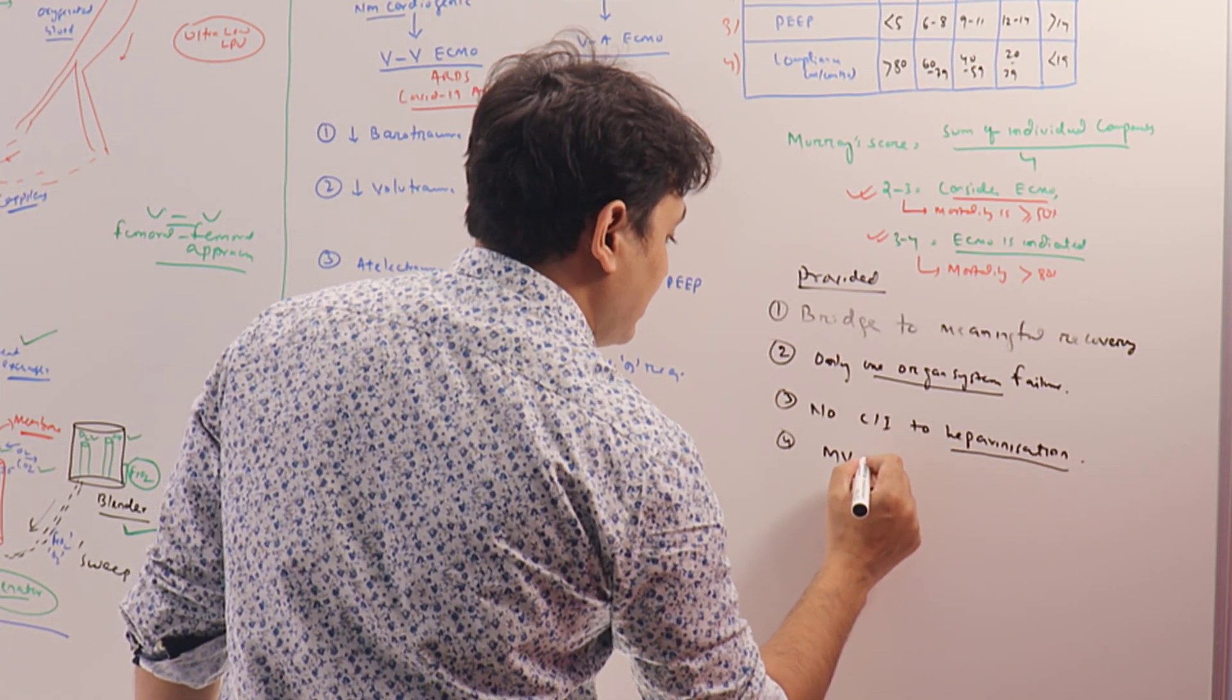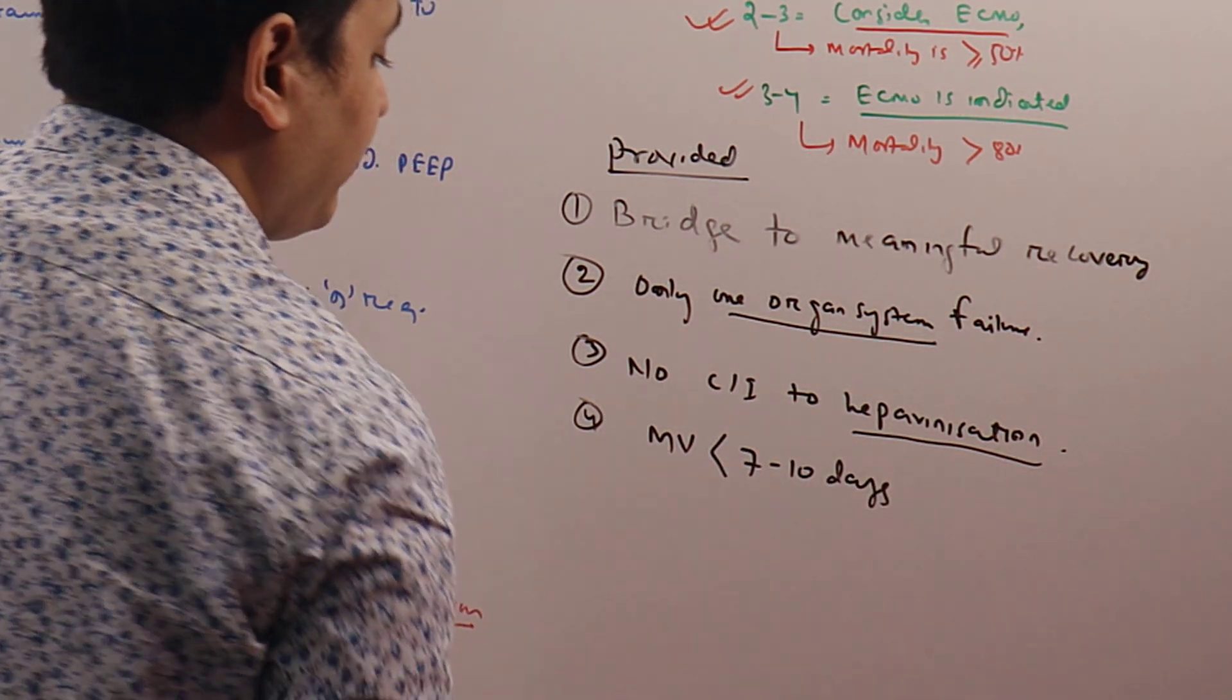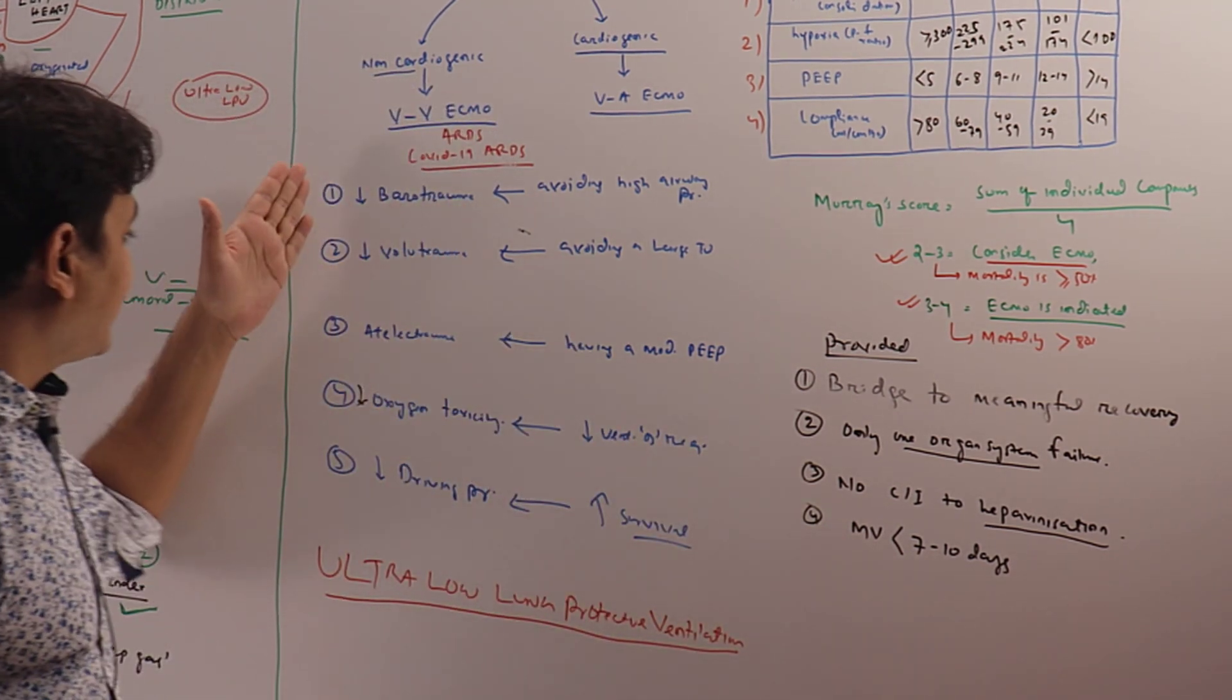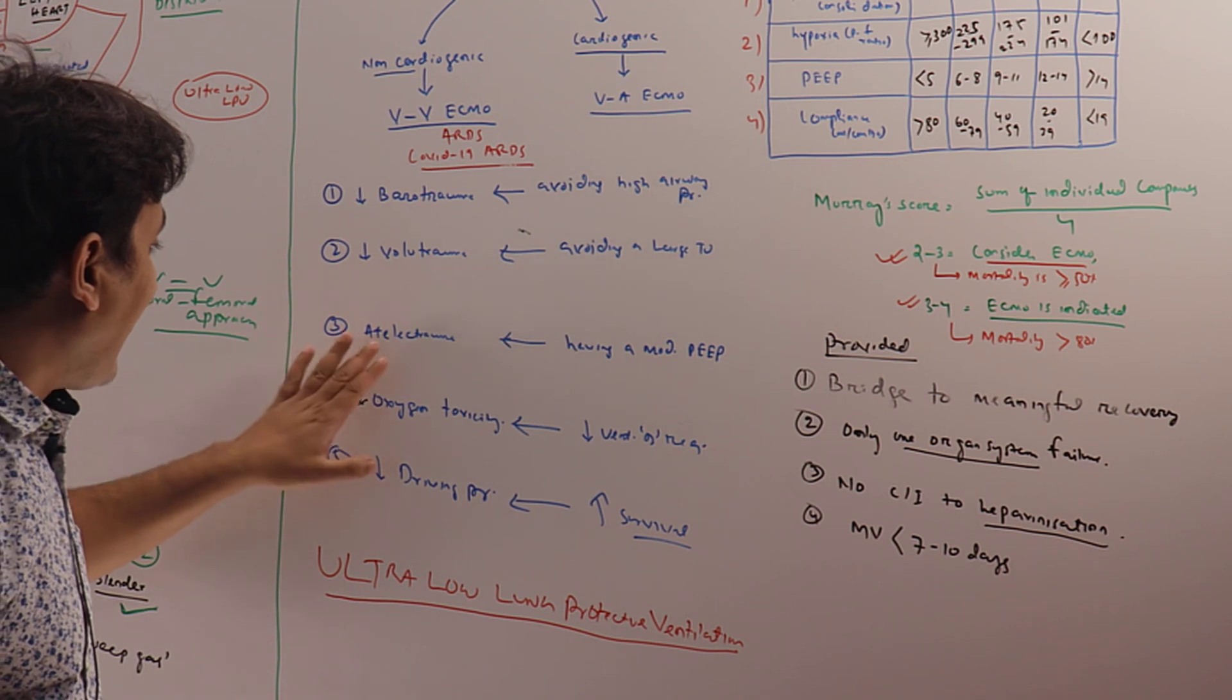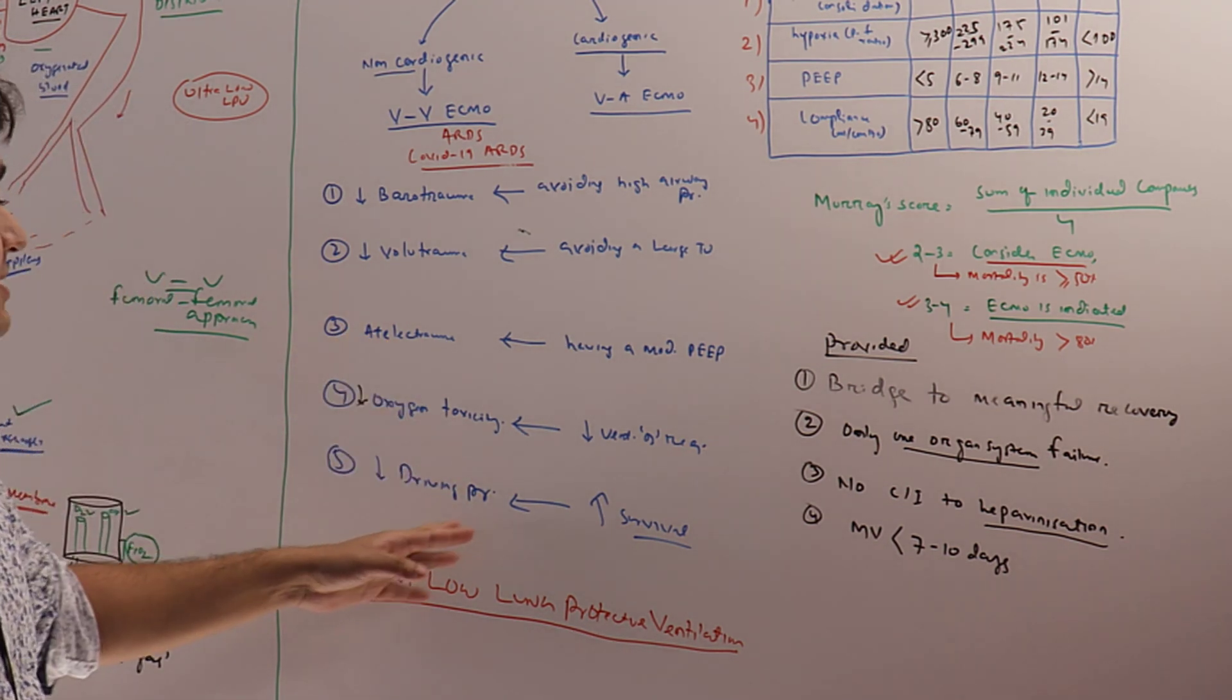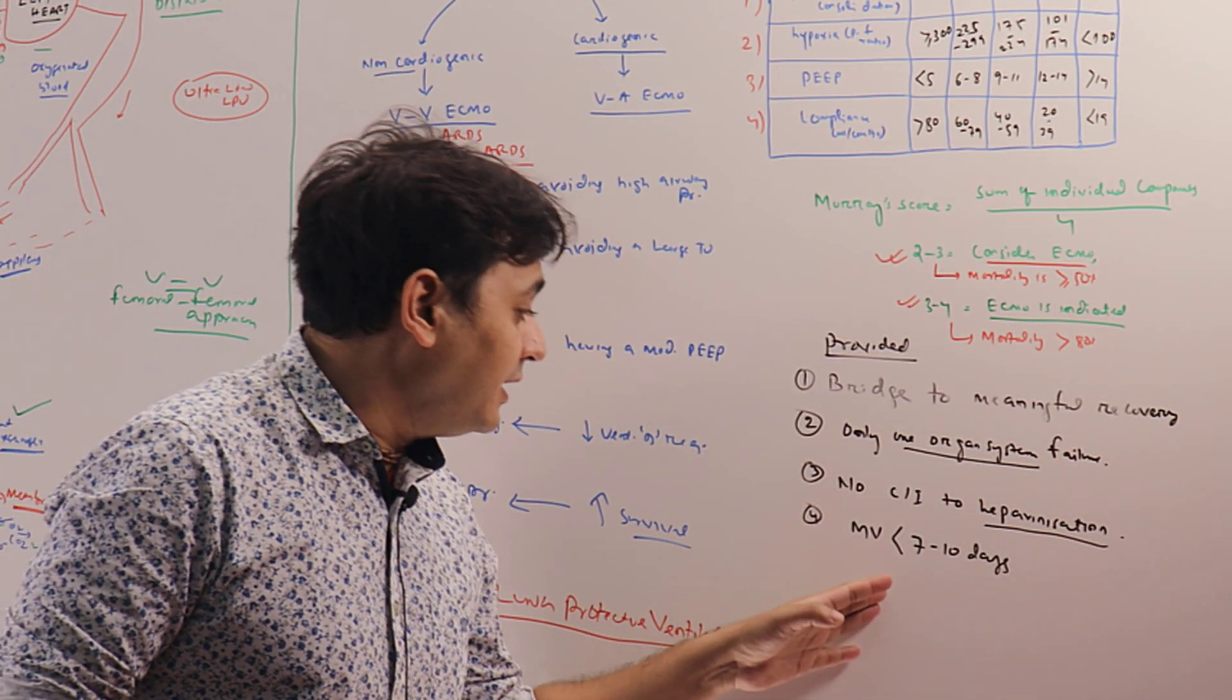And for patients who are on mechanical ventilation, the mechanical ventilation duration should be less than 7 to 10 days—the earlier the better. Because after 10 days of mechanical ventilation, barotrauma has been done, volutrauma has been done, atelectrauma has been done, there is significant oxygen toxicity and high driving pressure.